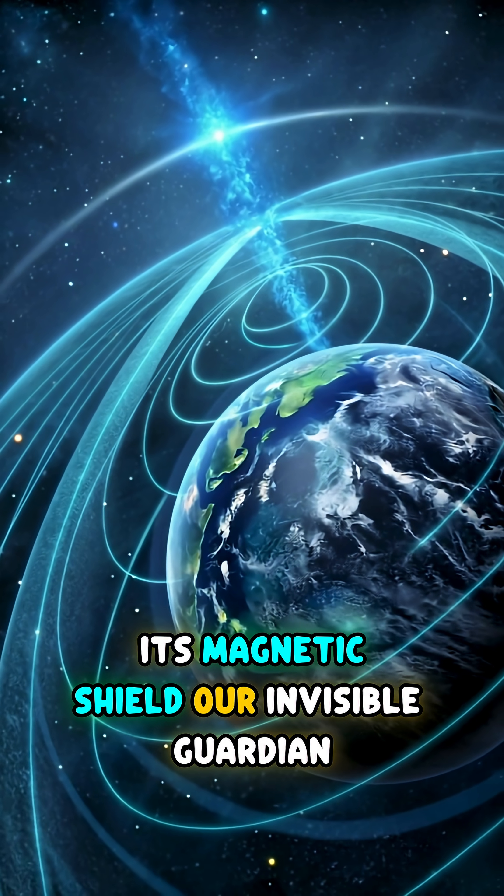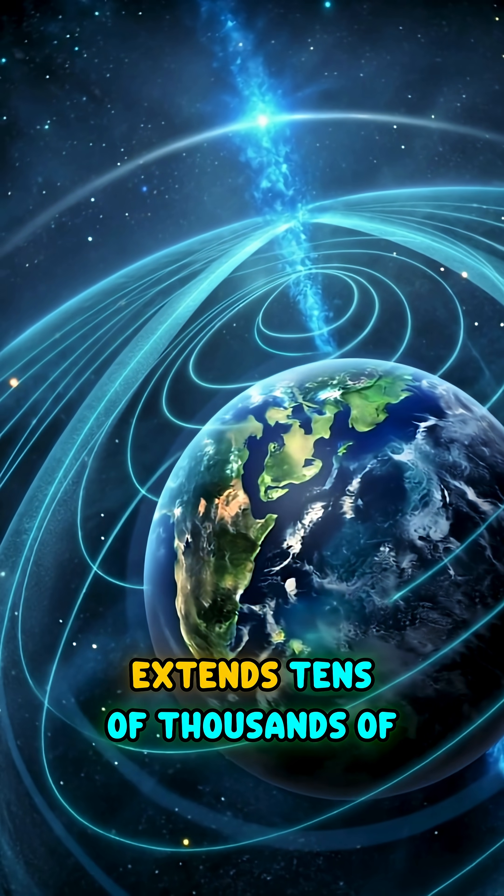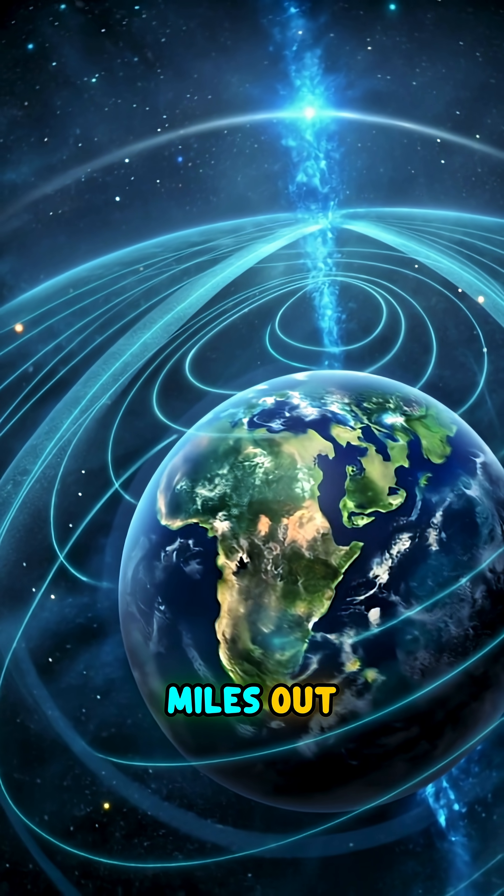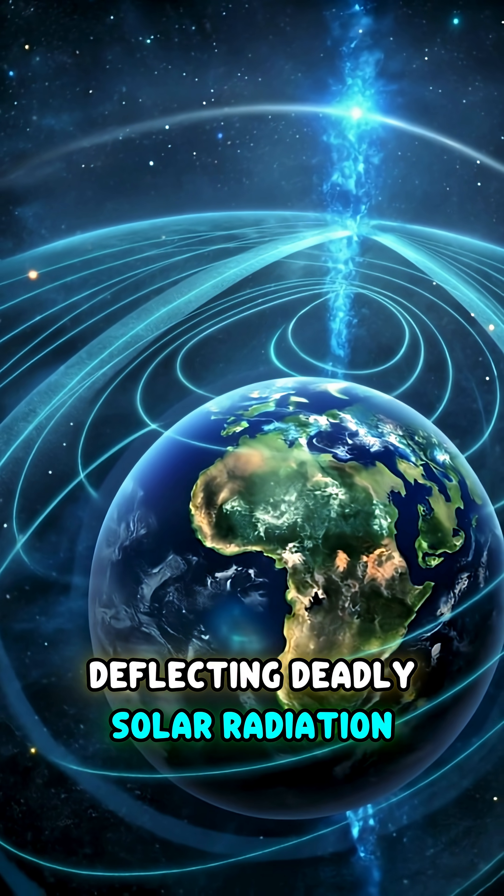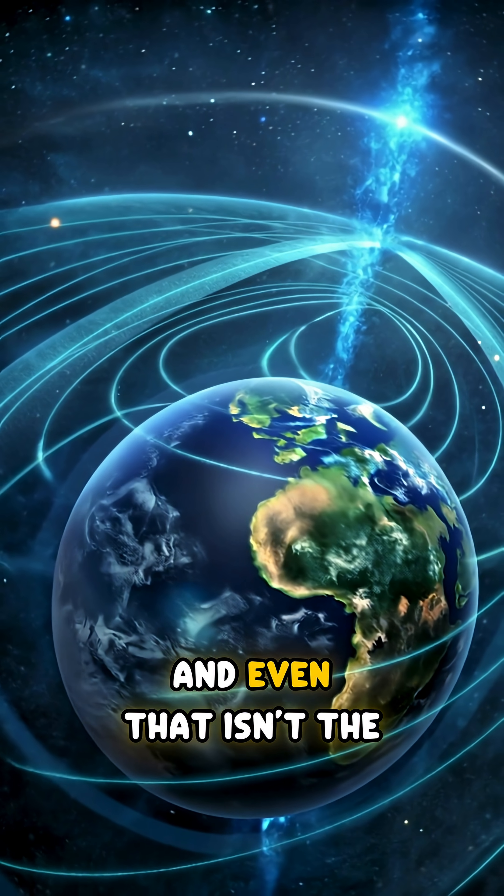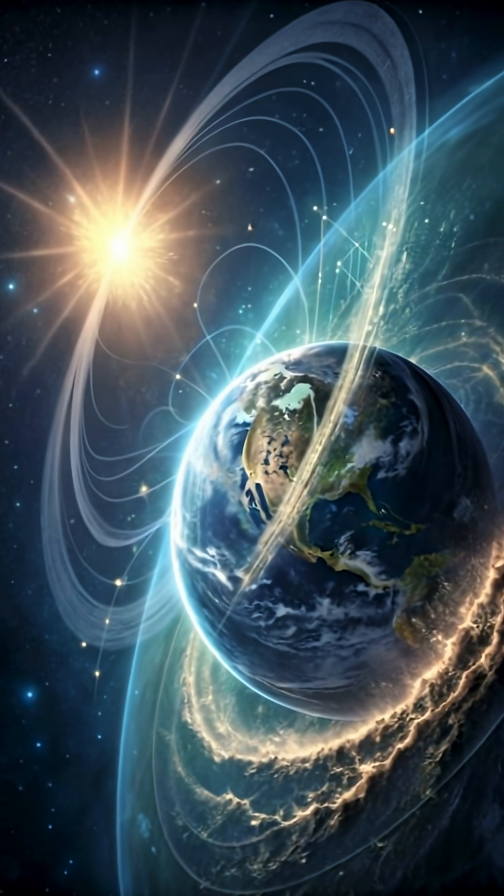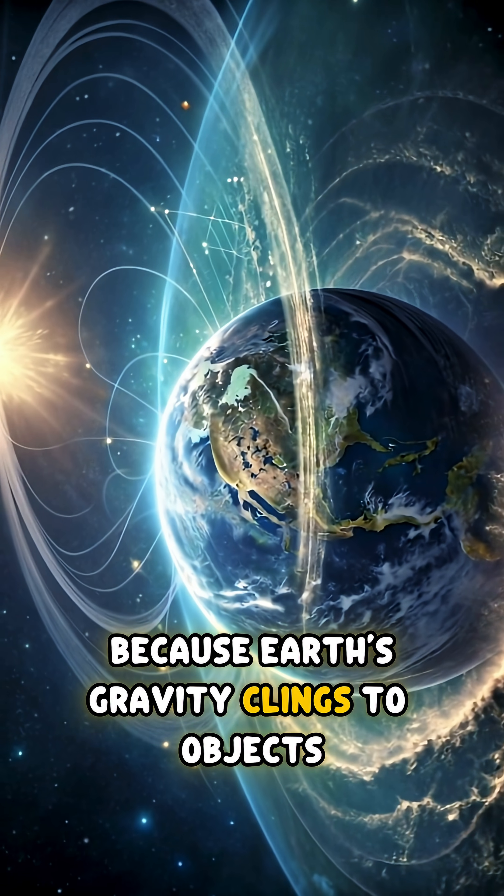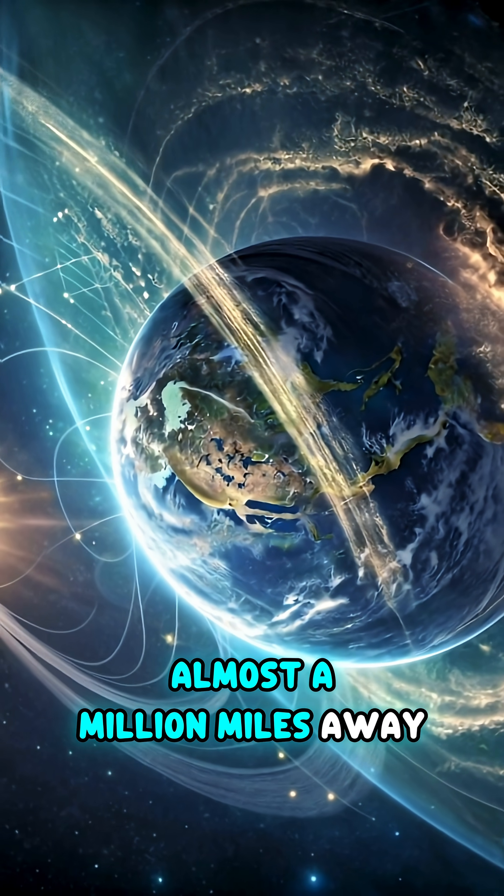Its magnetic shield, our invisible guardian, extends tens of thousands of miles out, deflecting deadly solar radiation. And even that isn't the true end. Because Earth's gravity clings to objects almost a million miles away.